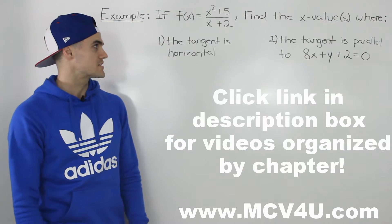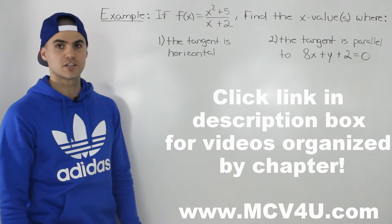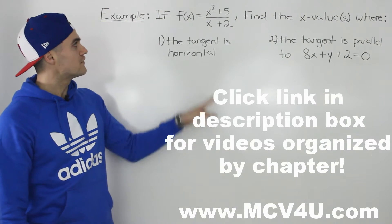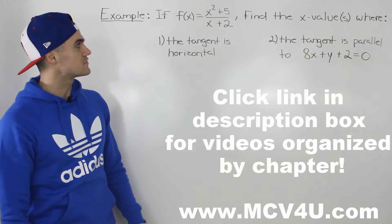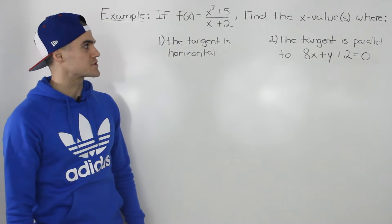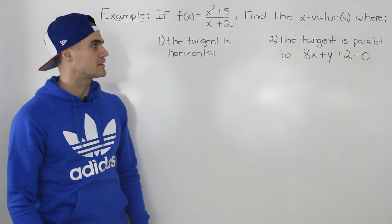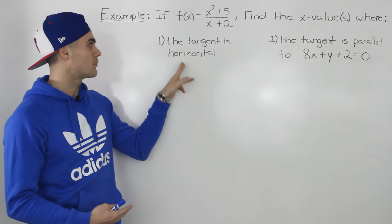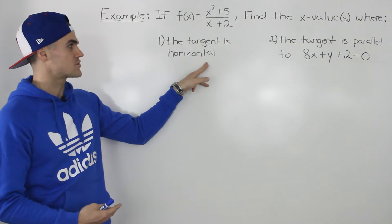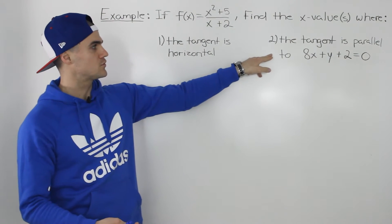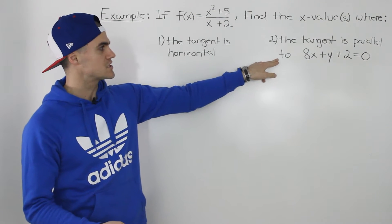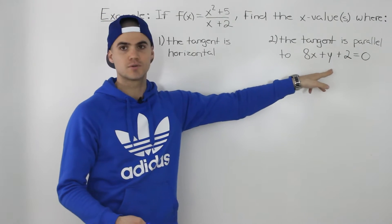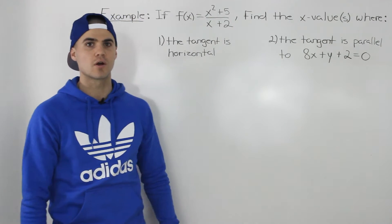In this video we're going to do an example using the quotient rule. So if f of x is equal to x squared plus 5 over x plus 2, find the x values where the tangent is horizontal, and where the tangent is parallel to the line 8x plus y plus 2 equals 0.